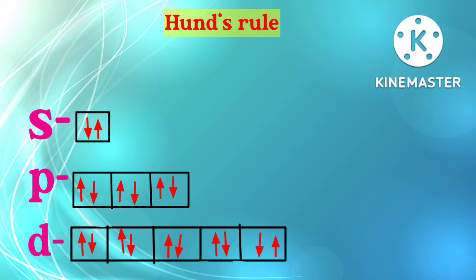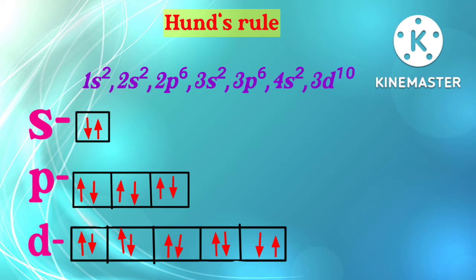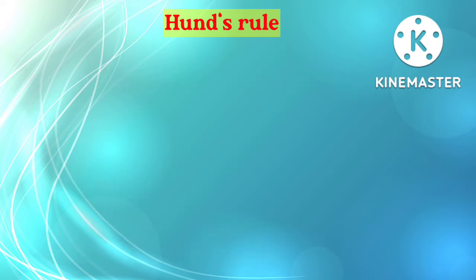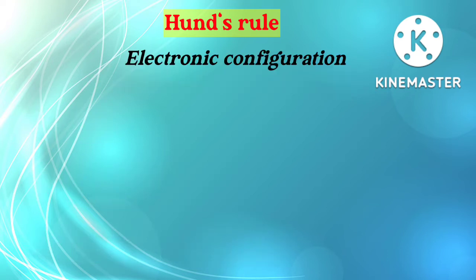Now we know how many electrons can be filled in which orbital. We show it like this: 1s2, 2s2, 2p6, 3s2, 3p6, 4s2, 3d10. Now let us see the electronic configuration of some elements.